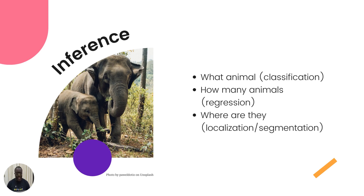Once you're done refining the hypothesis, you're able to carry out inference. The hypothesis is essentially our trained model, and we use it to infer answers. For example, given an image on screen, questions could include: what animal is in the image? How many animals are there? Where are these animals — can you give bounding boxes with their coordinates? These are examples of localization and segmentation problems.